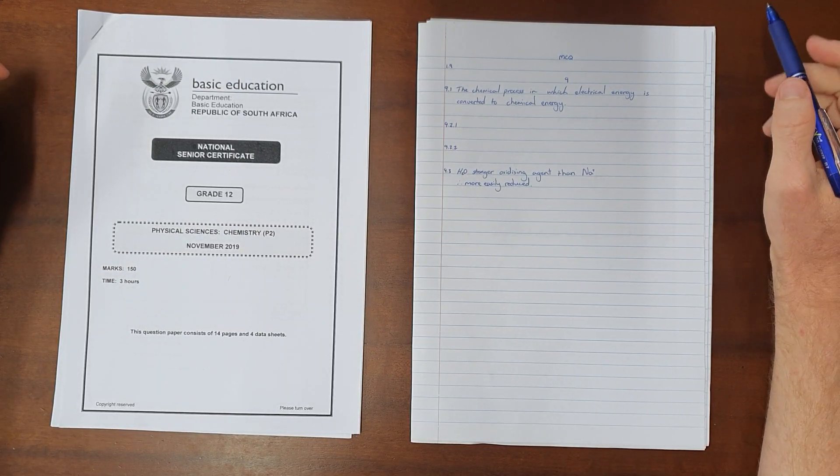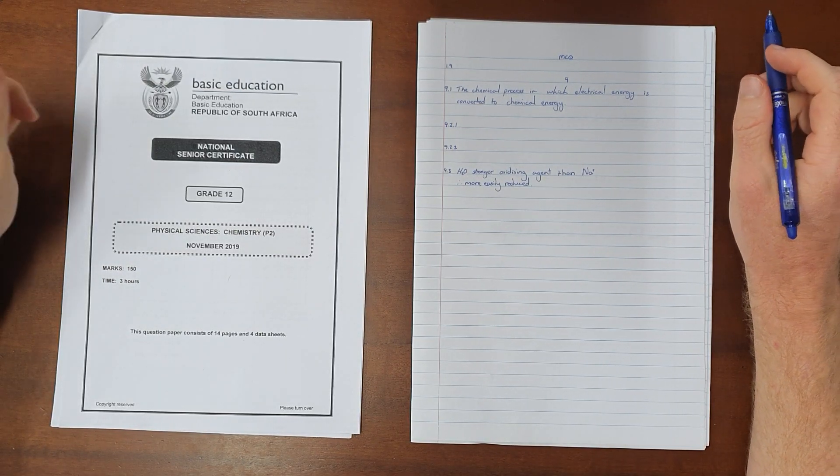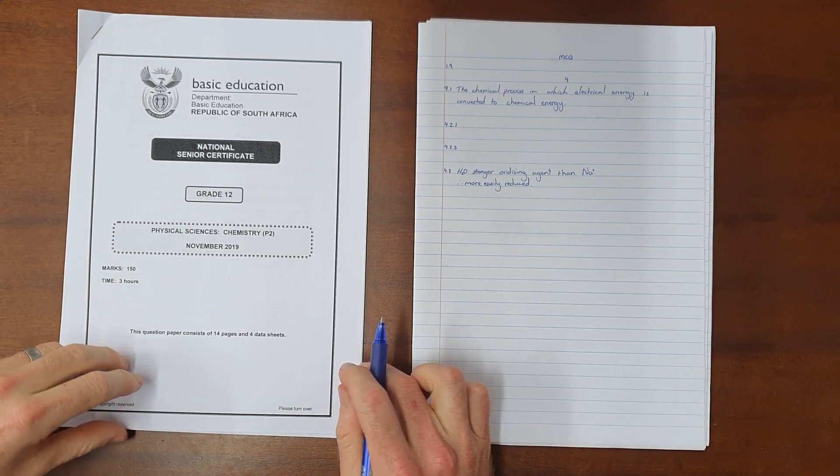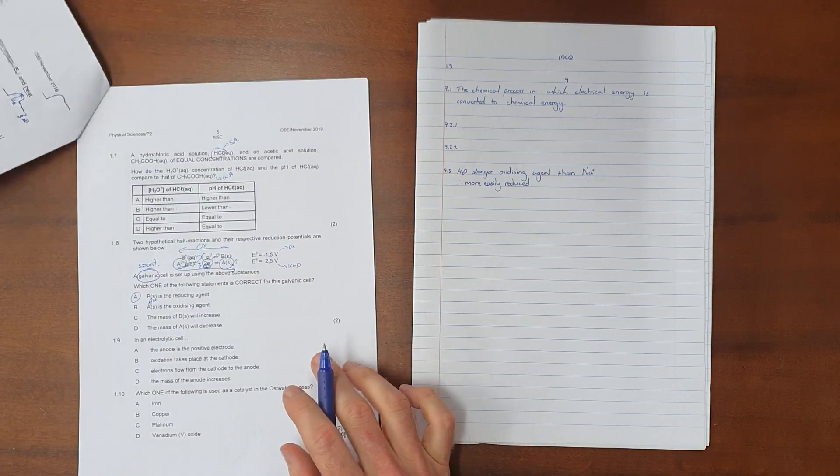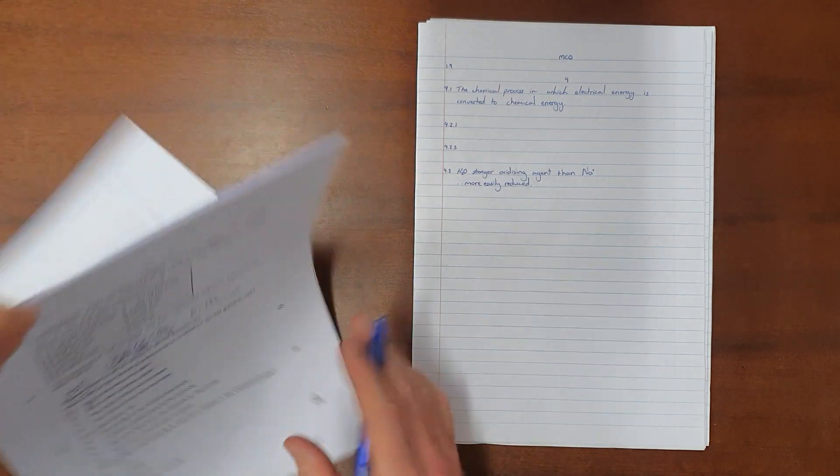I am working through the electrolysis section of the 2019 chemistry paper, which starts with question 1.9 in multiple choice, which reads as follows.